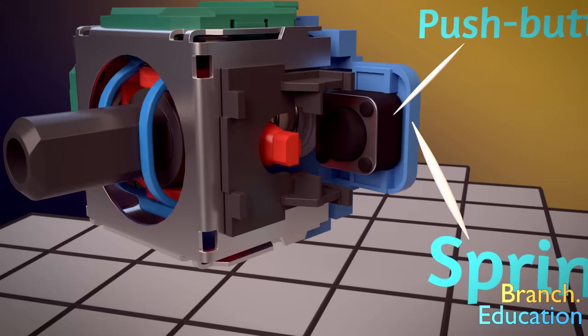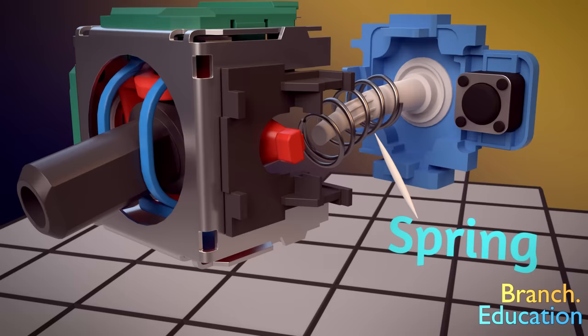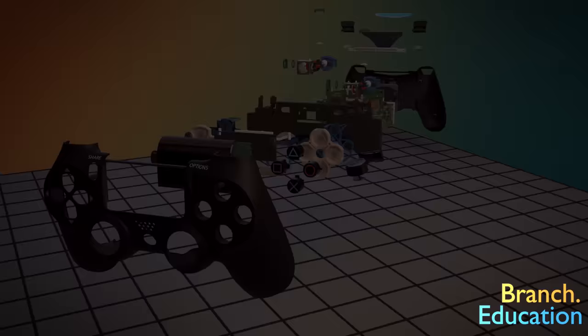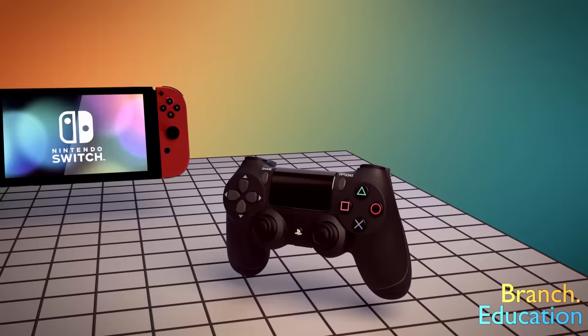Finally, there is a spring that returns the analog stick to the center of the metal bracket and returns the analog stick to its unpressed state. That wraps this episode up. By the way, this type of construction is similar to other video game controllers.